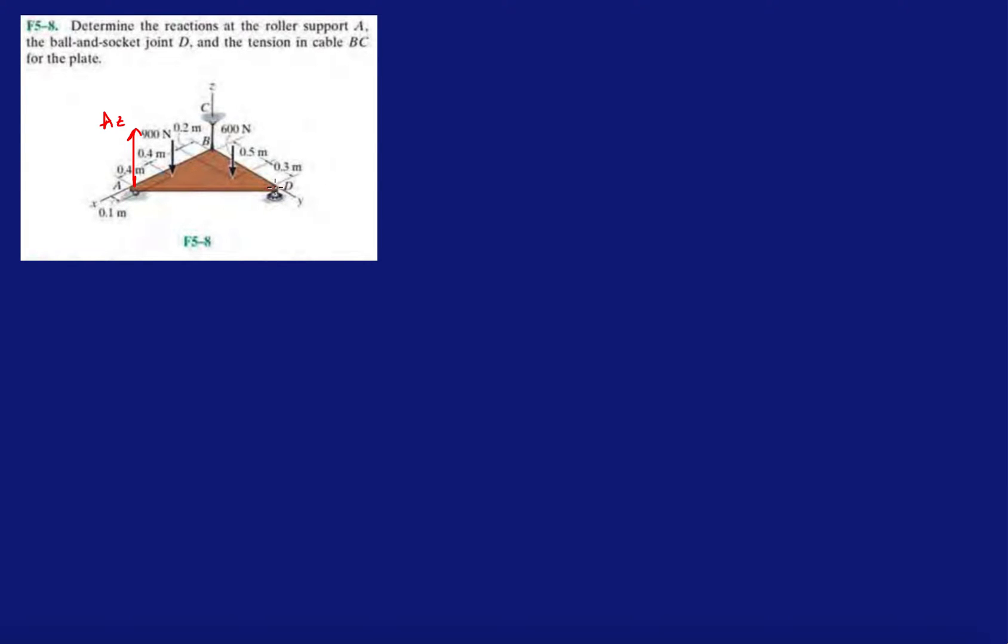The ball and socket joint at D can't move in any direction, so it's gonna have DZ, DY, and DX. You can look at these in the table that the book gives you for the types of supports. For now I'm not really interested in nailing down the correct direction of these forces. I'm just assuming these are the directions.